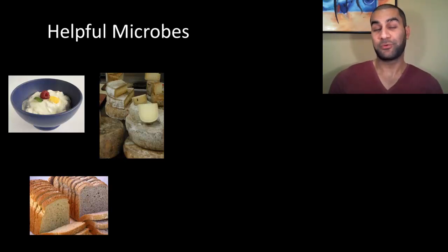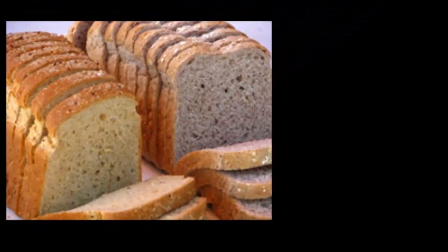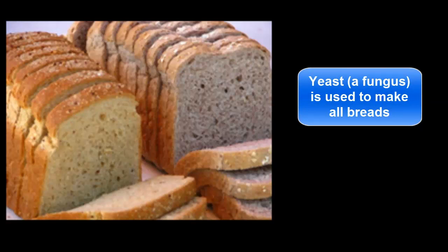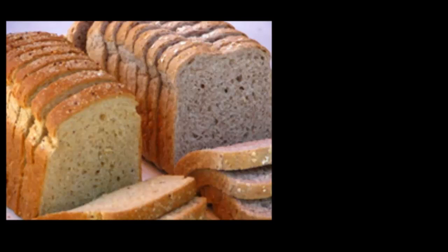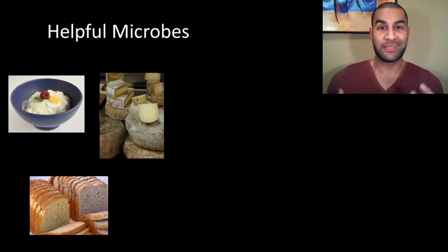Bacteria plays a very important role in the fermentation and the process of making a lot of the foods that you eat. Breads are another perfect example of how we utilize microbes' fermentation process to actually make food for us. In this case, instead of using bacteria, we're using fungus, particularly yeast. Yeast is actually a unicellular fungus that we'll learn about a little bit in the next unit. Fungus is important for a number of different reasons - we've learned to use yeast especially to help us produce all different categories of bread through its own fermentation process.